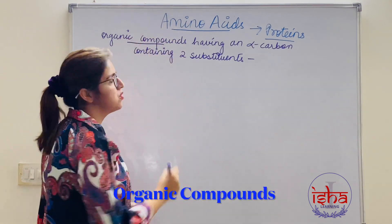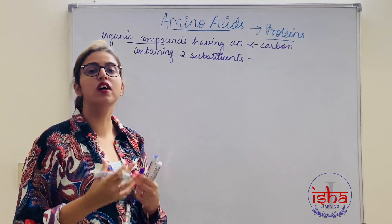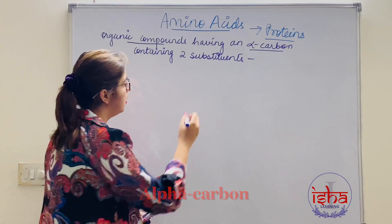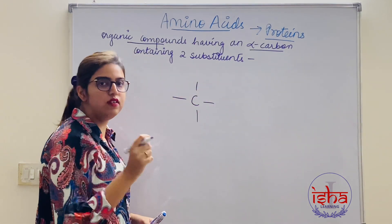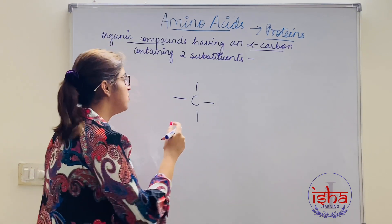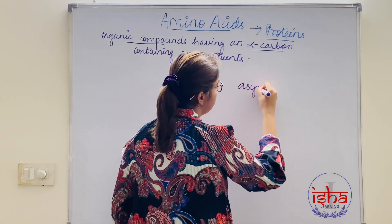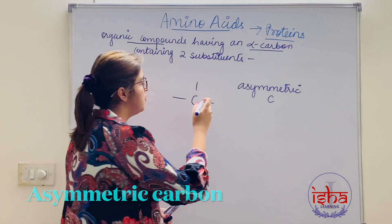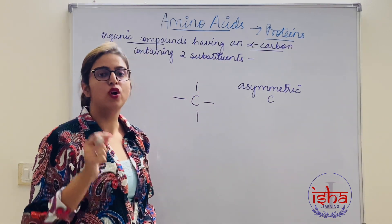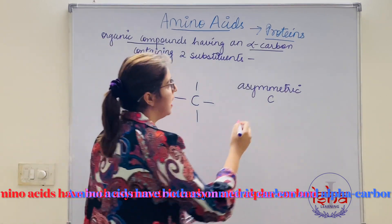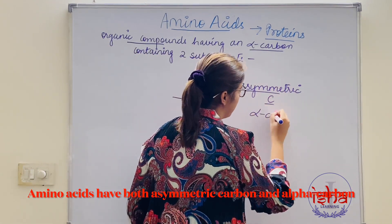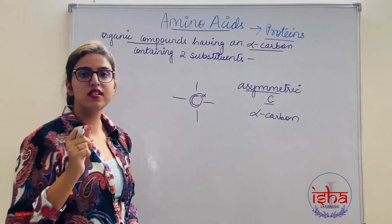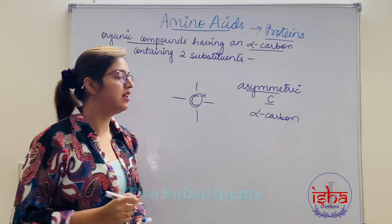Amino acids are organic compounds — they have carbon and hydrogen. They have an alpha carbon. A carbon has four valencies; when all four valencies are different, it is known as an asymmetric carbon. The first carbon to which all the groups are attached is known as the alpha carbon. In an amino acid, the alpha carbon is present in the center.